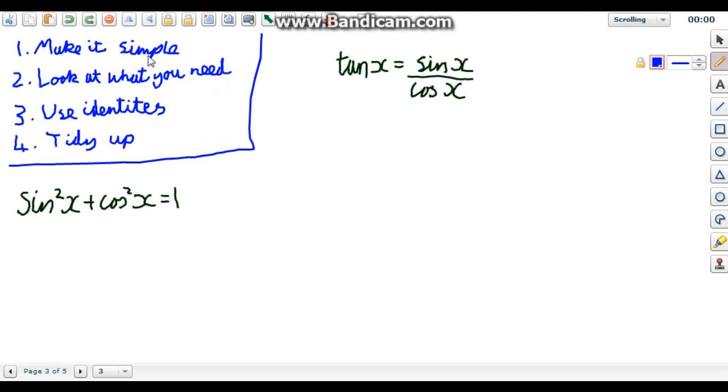Use one of the identities to get a bit closer. If you've used one, go back to the start and make it simple again. Take another look. See if you can use another to get even closer. When you get there and what you've got is the same as what you're trying to get to, then you just tidy it up and make it look the same to prove that you have done it.